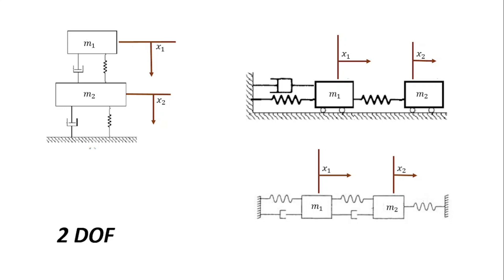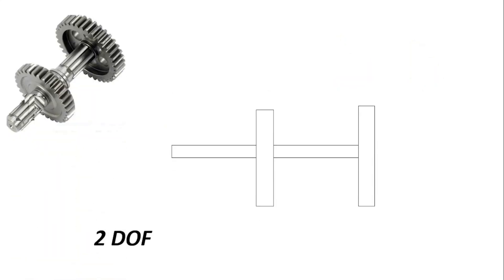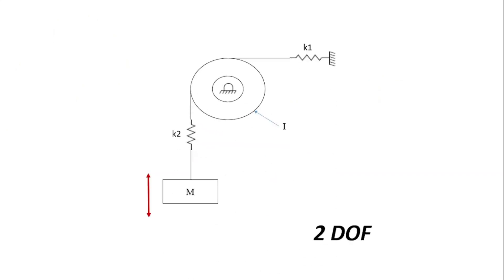Two degree of freedom systems are not limited to longitudinal vibration alone. We can also have two degrees of freedom in a rotational system, like gears attached to a shaft, such that one gear rotates through an angle theta-one and the other gear rotates through an angle theta-two. Each of these gears undergoes torsional vibration distinct from each other, and as a result this is a two degree of freedom system.